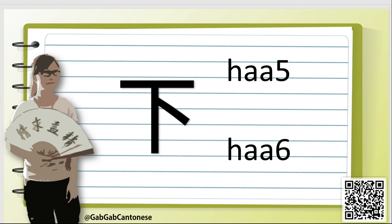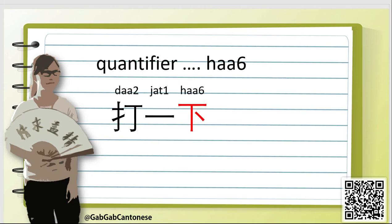For the last character in this lesson, it is 下. This character is also a multi-pronunciation character. When it is a quantifier, we pronounce it as 下. We can form the vocabulary 打一下, which means hit once.